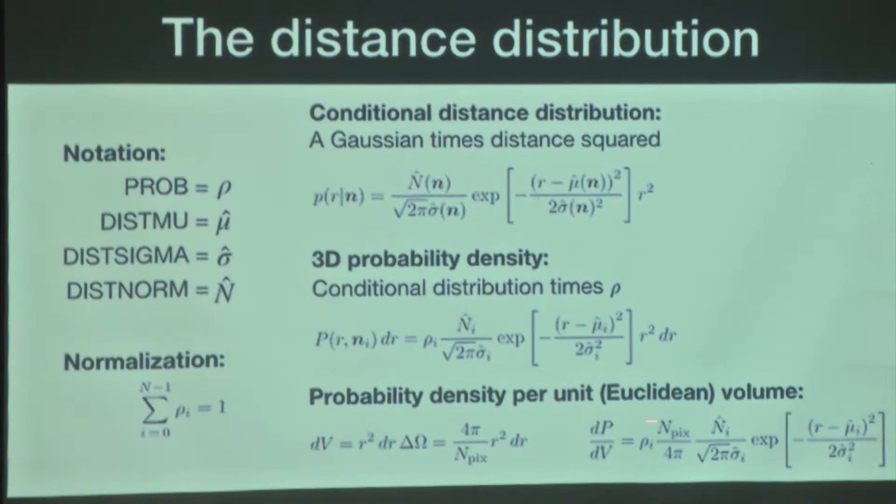We assume that the distance distribution at a given line of sight is given by a Gaussian times R squared. The location and scale parameters of that Gaussian are given by mu and sigma. These are kind of like mean and standard deviation, but they're not exactly the same because of this R squared factor and because the Gaussian is truncated at the origin. If we want to write down the 3D probability density, we just take the conditional distance distribution and multiply it by rho. Lastly, if we want the probability density per unit volume, then we have to divide dP by dV. The R squared from the conditional distance distribution and the R squared from the volume element cancel. You have to be careful whether you're working in spherical coordinates or Cartesian coordinates, and that determines whether or not you have the factor R squared hanging around.